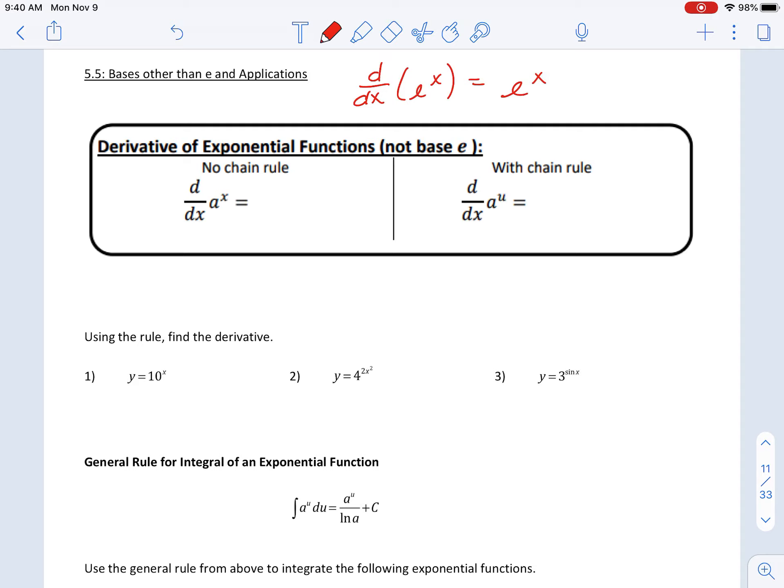Now, even if the base is not e, the same idea applies. The derivative of a to the x, where a is any number, could be 3 to the x, 4 to the x, is still going to be another exponential function. So you will still have that a to the x, that exponential function. But this time, you're going to have times the natural log of a.